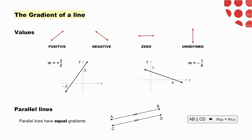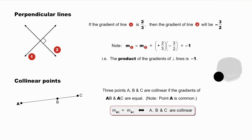Very significant is the gradient of a line and its values: positive, negative, zero, and undefined. Pause to note the gradients of these two lines — this one must be positive and it is 3 over 2. The fact that parallel lines have equal gradients is an important point to remember, and note that parallel lines imply equal gradients but that the reverse is also true. The gradients of perpendicular lines 1 and 2 are 2 over 3 and minus 3 over 2, and the product of these gradients equals minus 1 — i.e., the product of the gradients of perpendicular lines is minus 1.